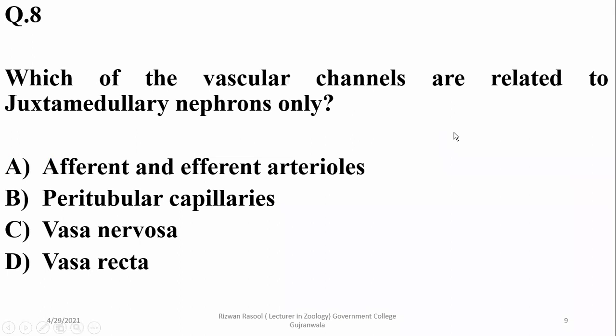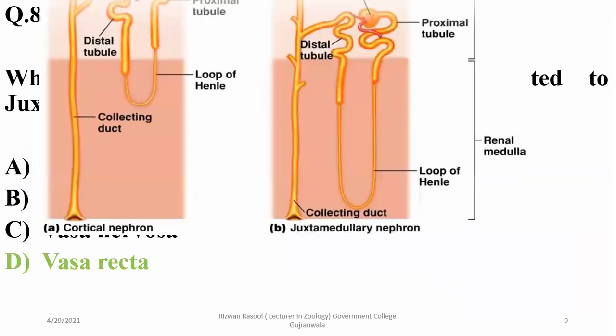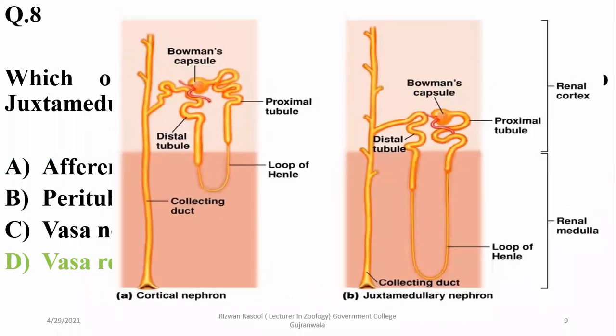Which vascular channels are related to juxtamedullary nephrons only? Juxtamedullary nephrons are covered by vasa recta, so delta is the right option.